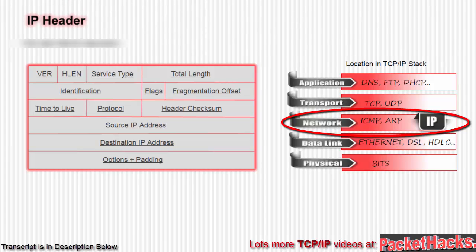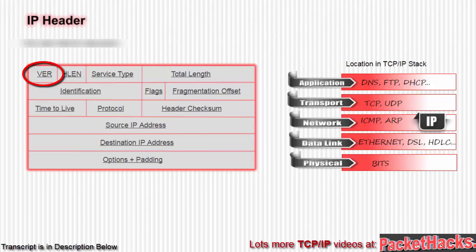Now let's examine the fields in great detail. Version field, which is 4 bits. This defines the version of the IP protocol. Currently, the version you have mostly is version 4 — that is IPv4 — with IPv6 coming in fast.